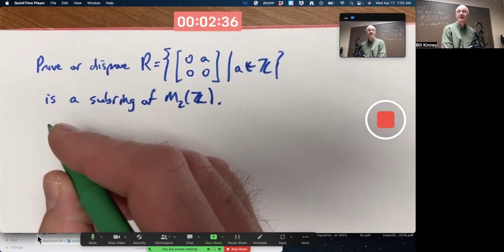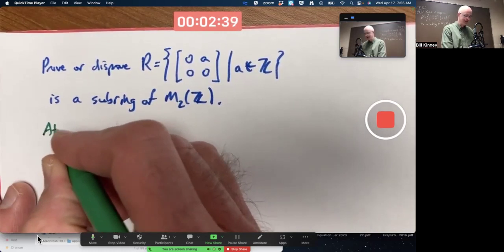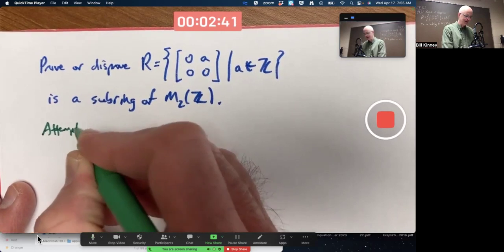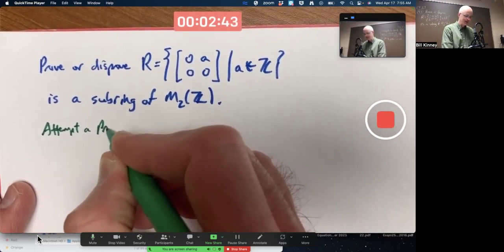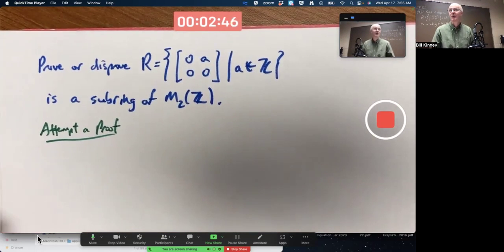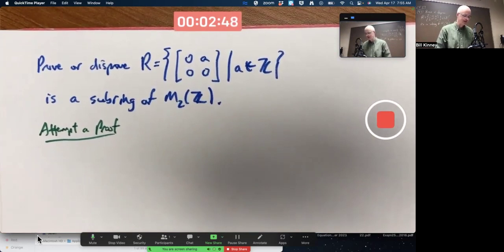So let's go ahead and sort of assume it's true. And let's attempt to prove. Let's attempt to prove, assuming it's true, when theoretically ahead of time, you don't know for sure if it's true or not, if the problem sprays like this.